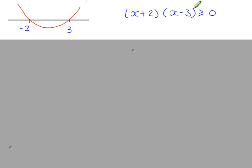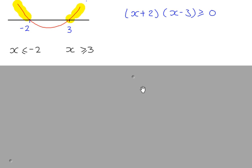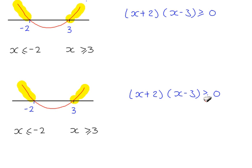I've changed the inequality again. This time it says greater than or equal to 0, so I'm looking for the portion of the curve where the y-values are equal to 0 or positive. Those are two separate regions: starting from minus 2 going left, and starting from 3 going right. So the solution is written as two separate inequalities for two separate regions. If the inequality said strictly greater than 0, you simply exclude the endpoints: x is less than minus 2 and x is greater than 3.